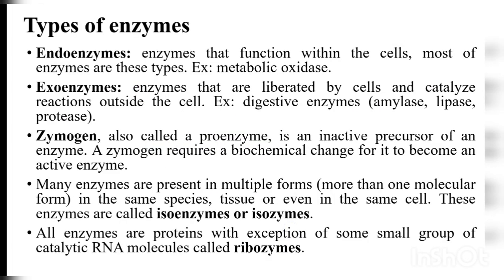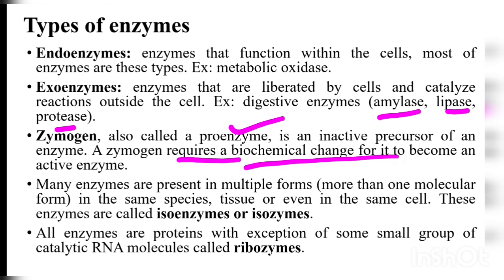The types of enzyme: one is endo enzymes, which function within the cell — most enzymes are of this type, for example metabolic oxidase. Then exo enzymes are liberated by the cell and catalyze reactions outside the cell, for example amylase, lipase, protease. Then what is a zymogen? These are called proenzymes — inactive or precursor forms of an enzyme. Zymogens require biochemical changes to become active enzymes.